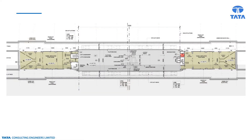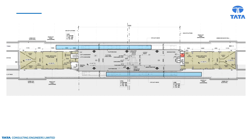The platform length shall accommodate the length of the train plus allowance for inaccurate stopping. The width adopted shall also cater to the holding capacity of the platform in case of an emergency scenario. Seating arrangement is planned away from the main passenger flows; a minimum of four banks of three seats is recommended.